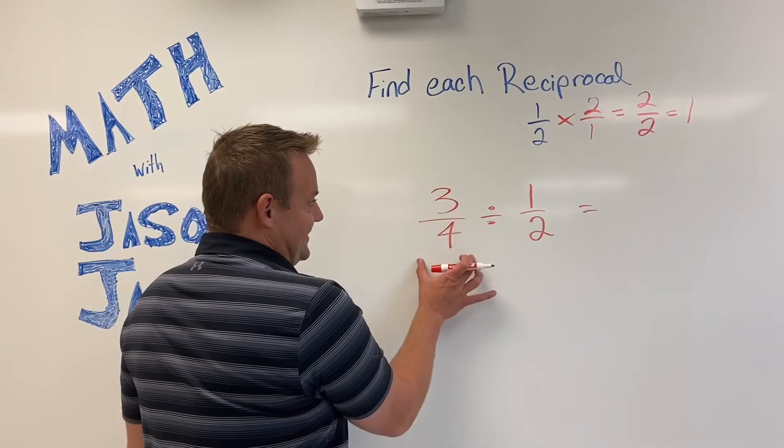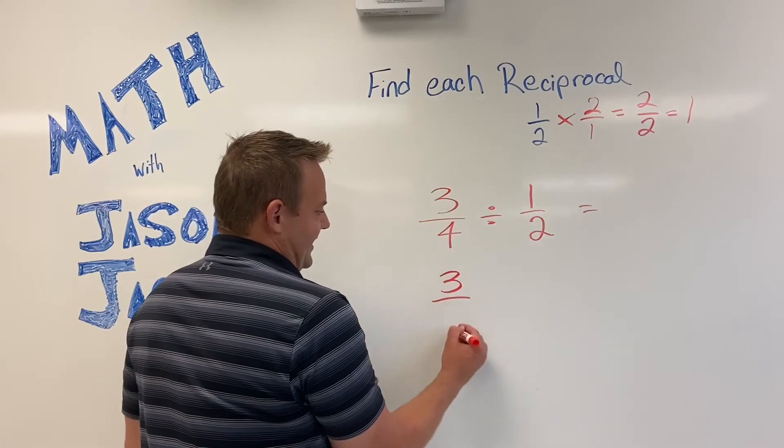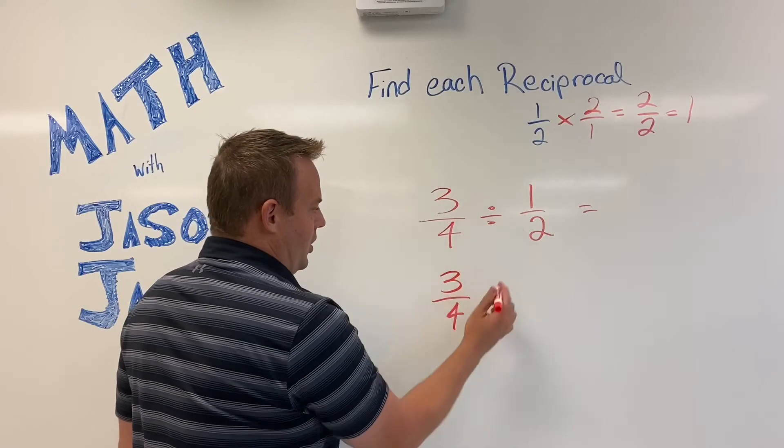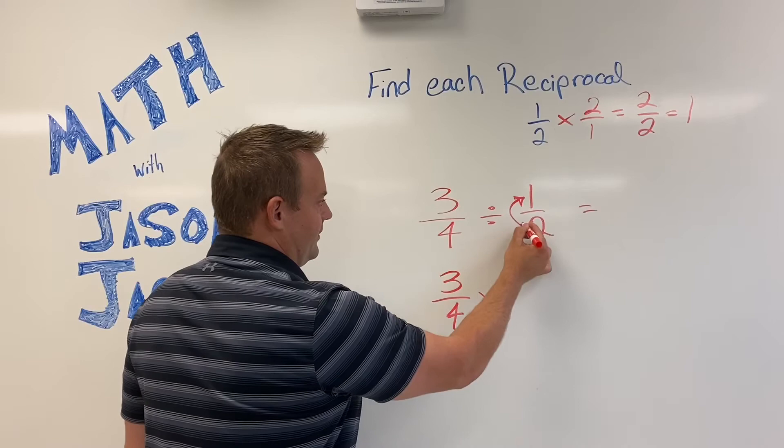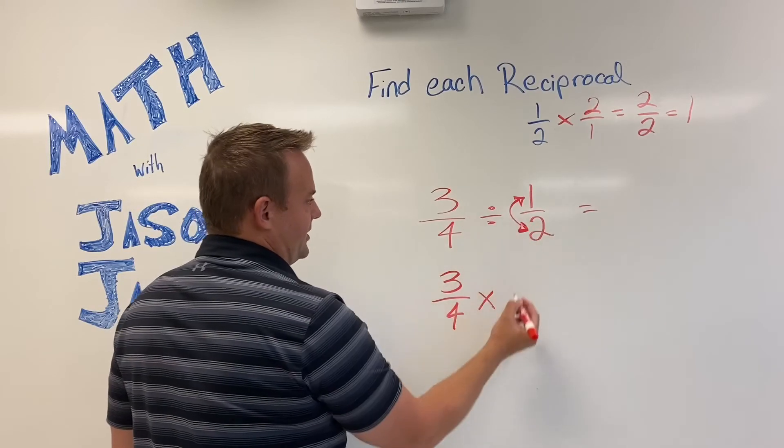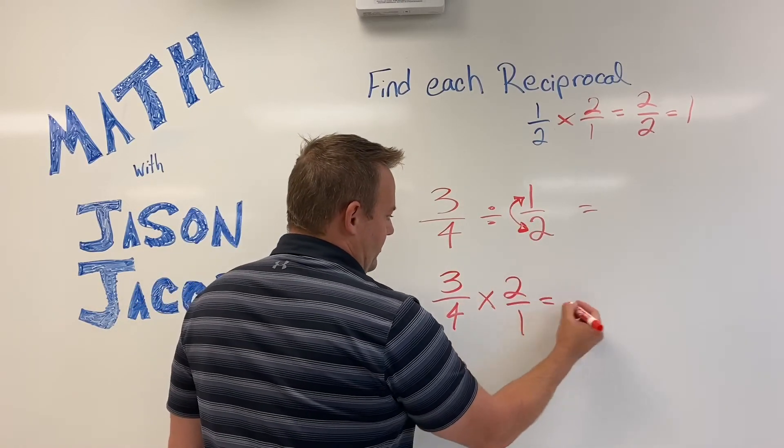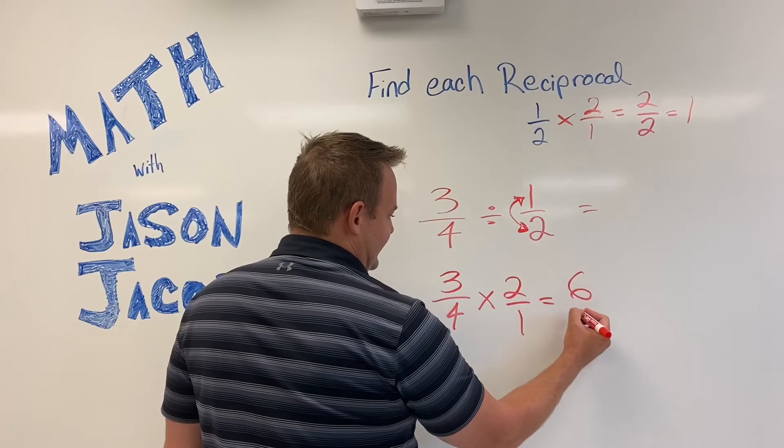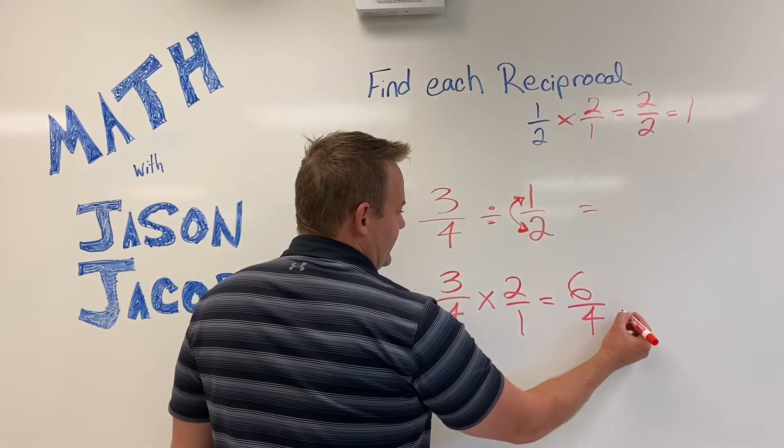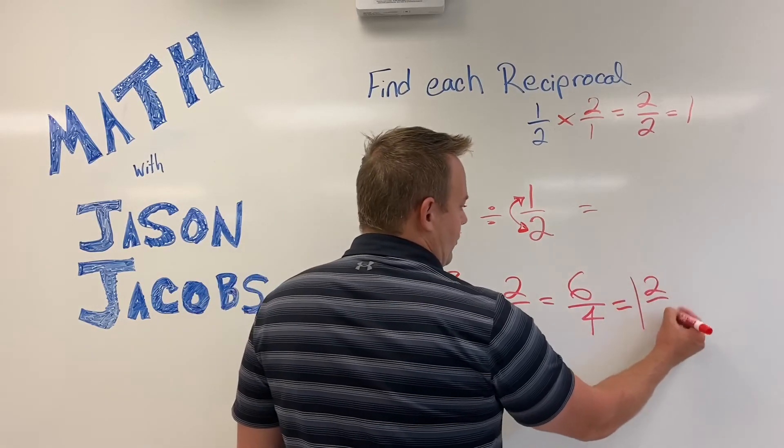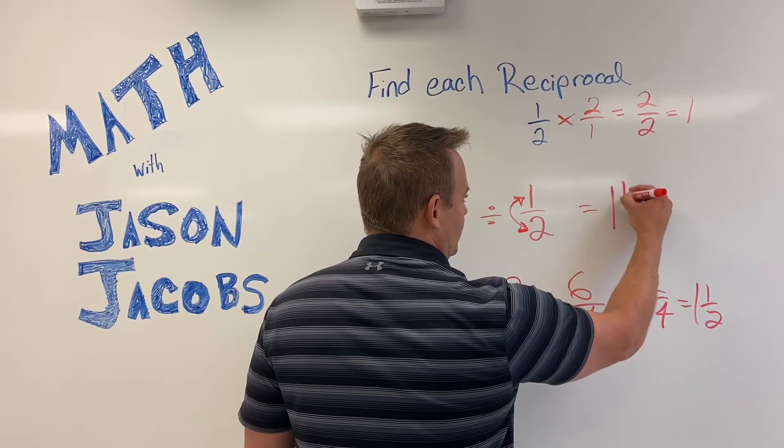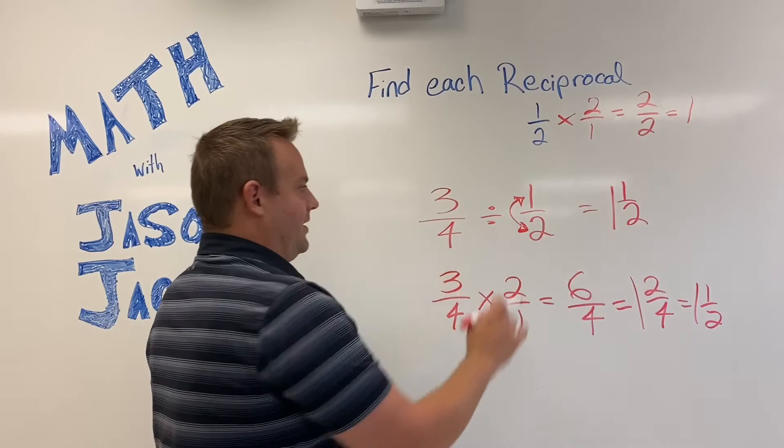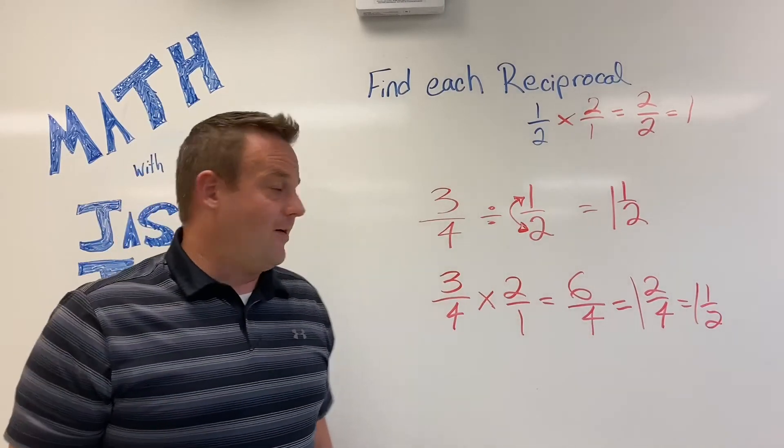So, the dividend stays the same. Three fourths stays the same. Then, you multiply by the reciprocal. Again, flip-flopping the numerator and denominator just like so. And you get six fourths, which equals one and two fourths, which equals one and one half, which is equal to the quotient of these.